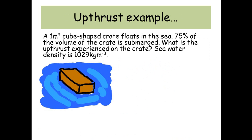Up thrust example. A one metre cube shaped crate floats in the sea. 75% of the volume of the crate is submerged. What is the up thrust experienced by the crate? Seawater density is 1029 kilograms per metres cubed. So we're going to use our equation.